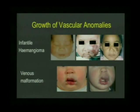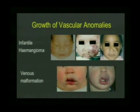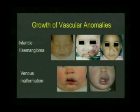Looking at the growth of vascular anomalies is quite interesting. Comparing an infantile hemangioma to a venous malformation — infantile hemangiomas, which are vascular tumors, go through a three-phase life cycle: proliferation, then spontaneous involution over about five to seven years, and finally complete involution, leaving fibro-fatty change. So there are three phases: proliferating, involuting, and involuted.